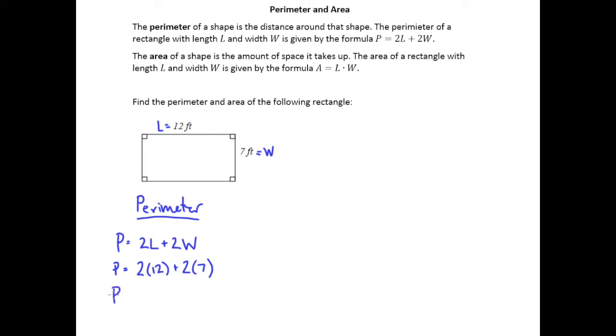So we will be multiplying 2 times 12, which gives us 24, and 2 times 7, which gives us 14, first. And then after we're done with that, we'll go ahead and add those results. So we get a perimeter of 38 feet.